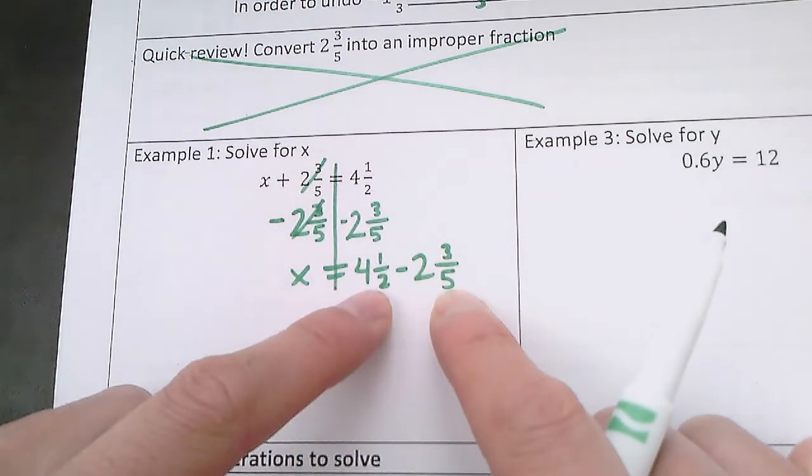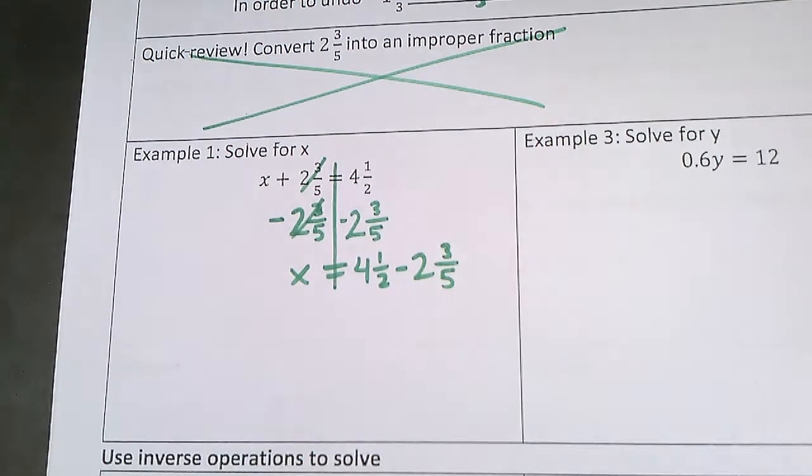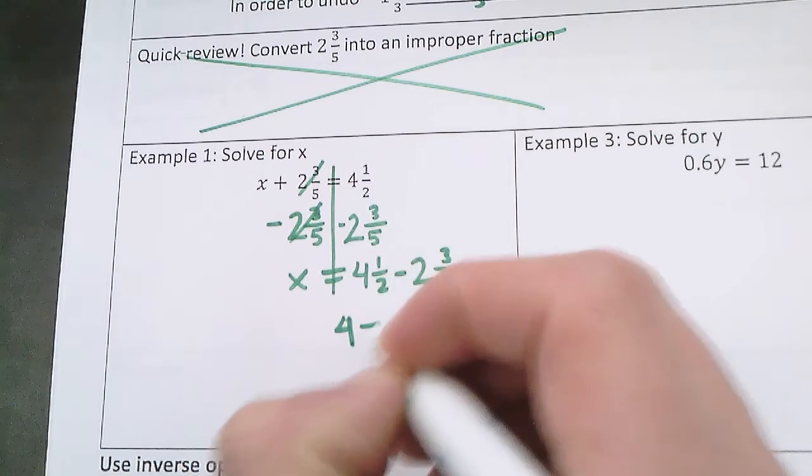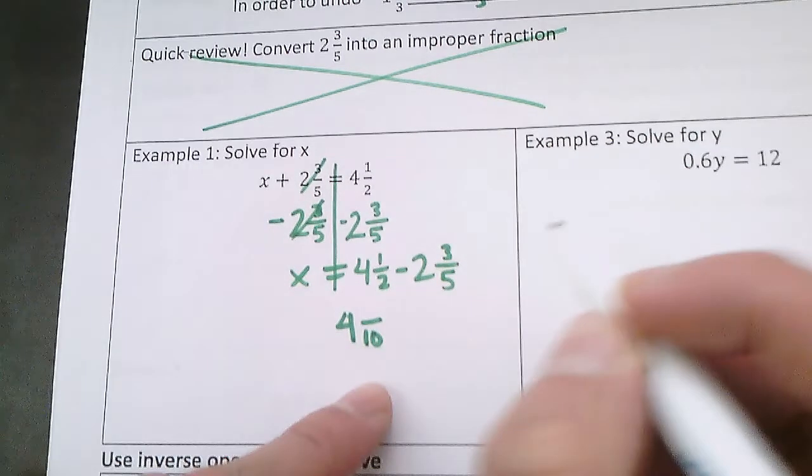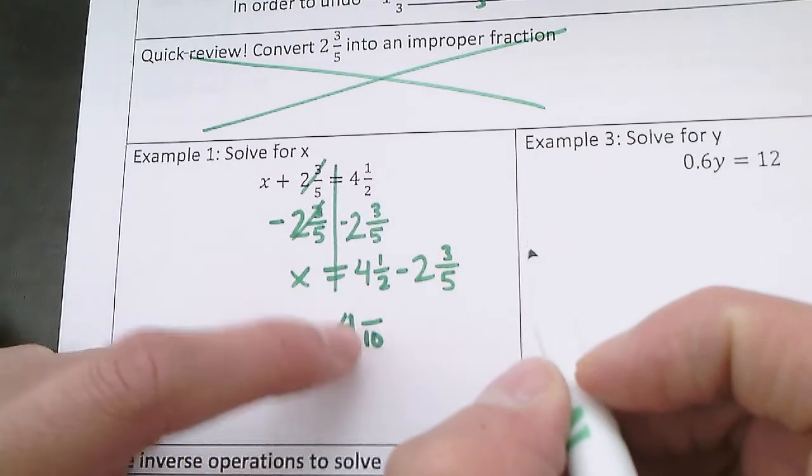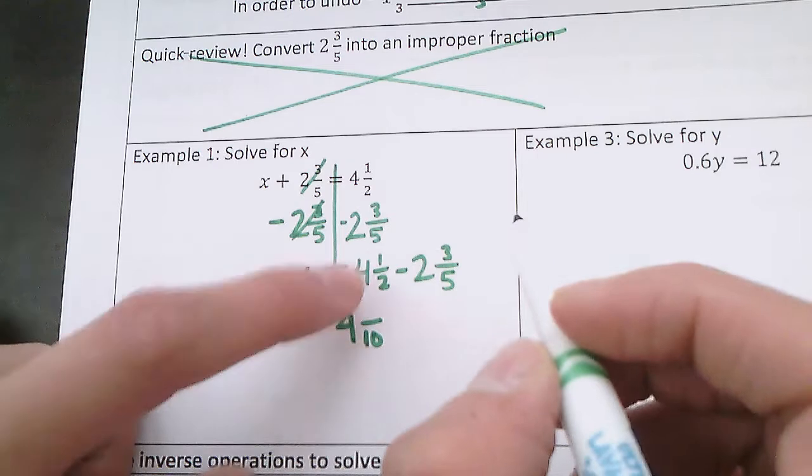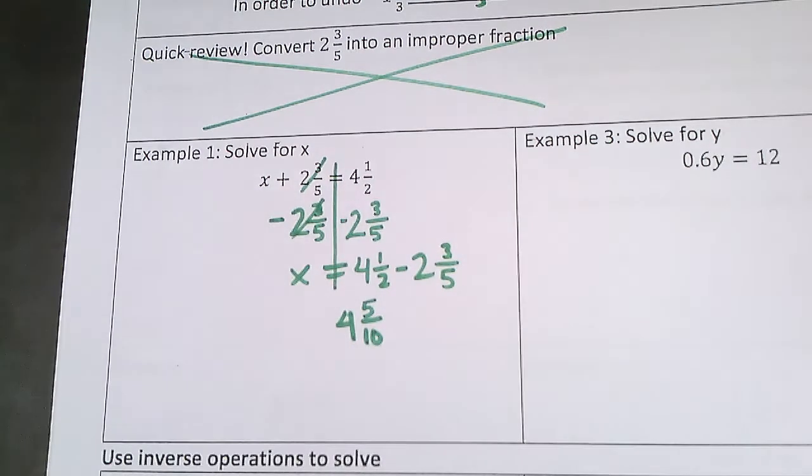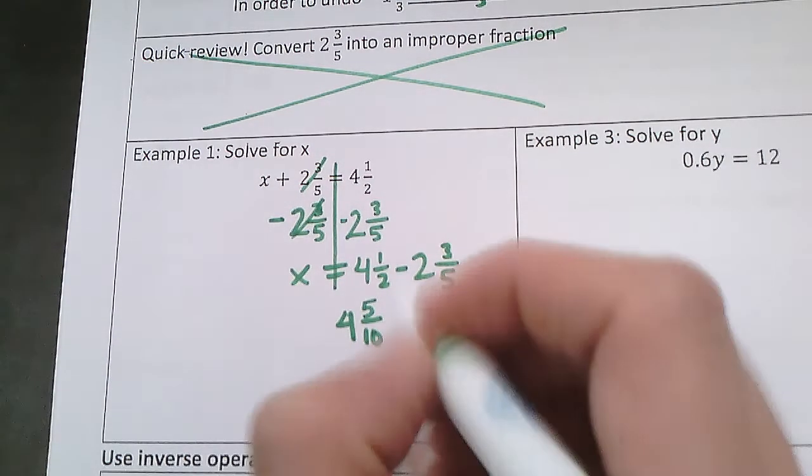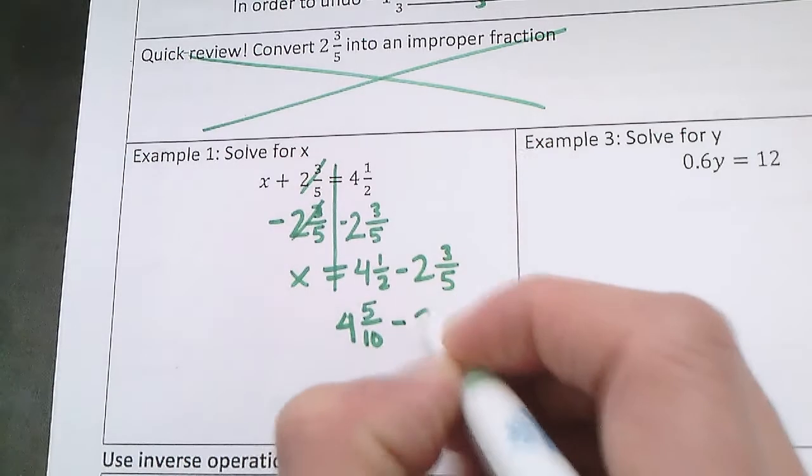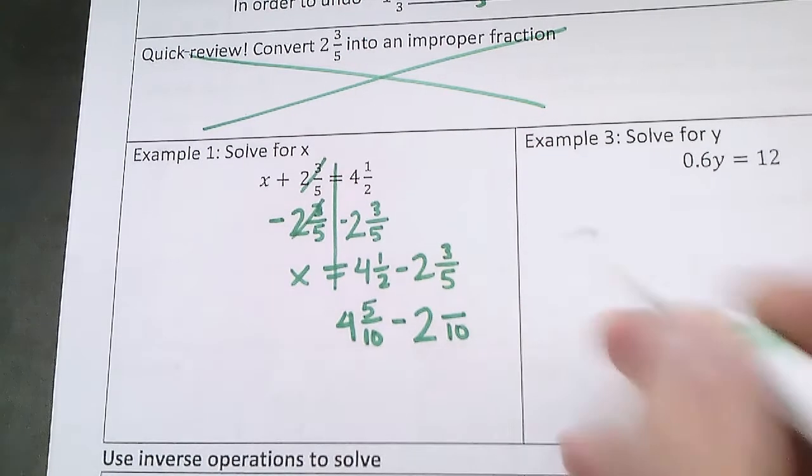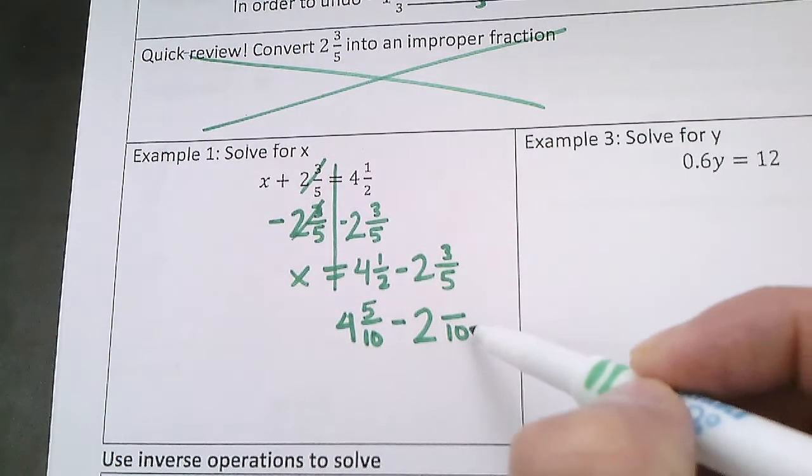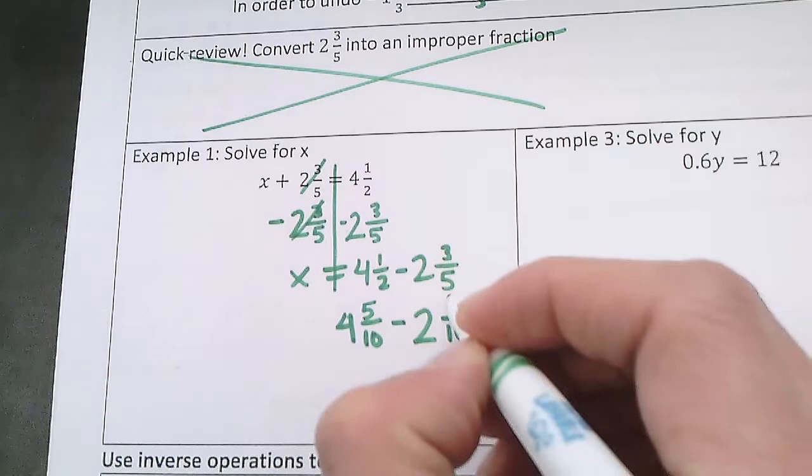So I'm going to have 4 and I want 10 as the denominator. So in order to get to 10, I multiply 2 times 5, and I have 4 and 5 tenths minus 2. And I want 10 as the denominator. I had to multiply 5 times 2 to get to 10, and then 3 times 2, which would be 6.